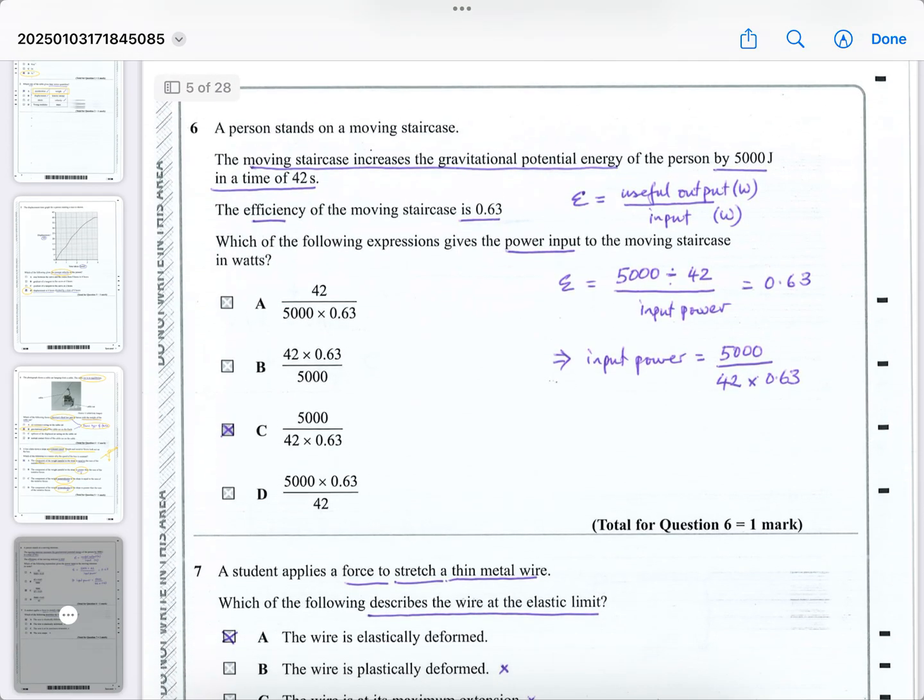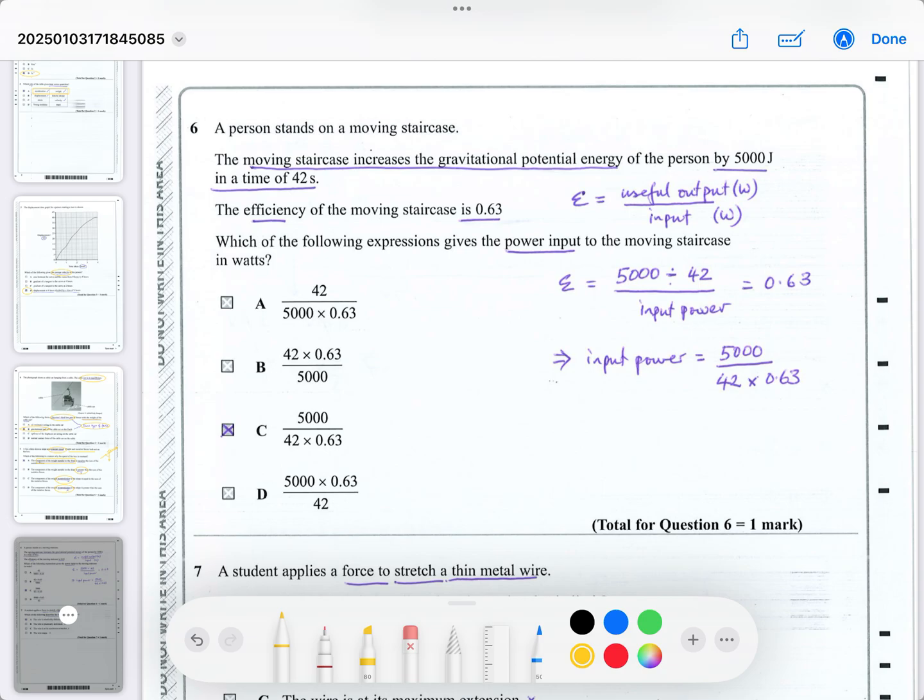Question six. A person stands on a moving staircase. The moving staircase increases the gravitational potential energy. So there's your output. By 5000 joules in 42 seconds. So you know joules and you know seconds. So you can work out the power. It says the efficiency is 0.63. And they want you to work out the power input. So you've got to use the equation for efficiency in terms of watt ratios, as in watts rather than joules. You can do either. You know the efficiency. And we know the useful power output is 5000 divided by 42 seconds. And therefore the only unknown is input power. Change the subject. You will get this equation. And you can see that that matches this answer. So again, it's just algebra.